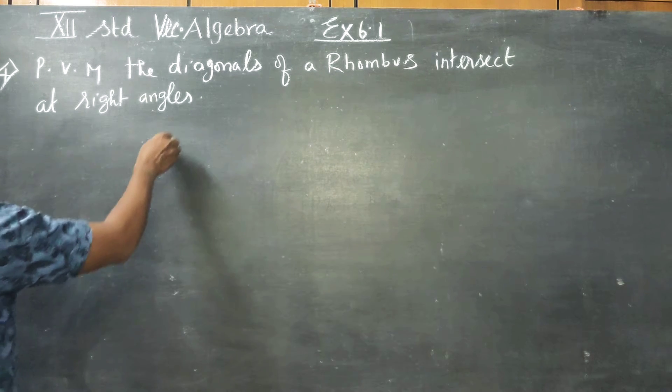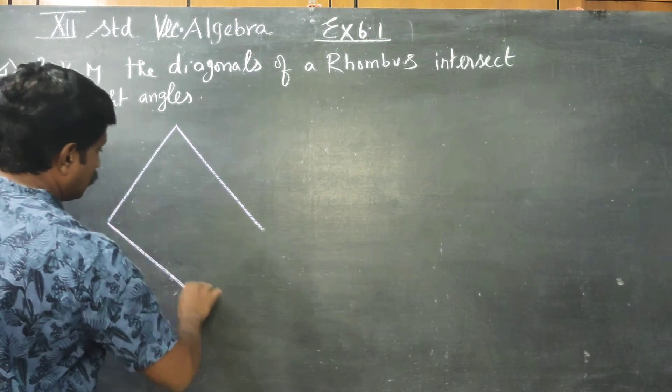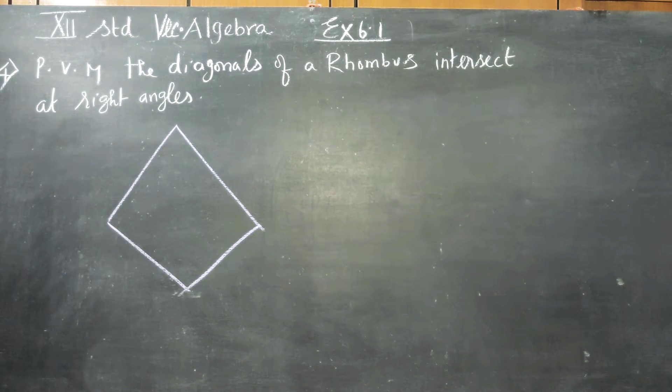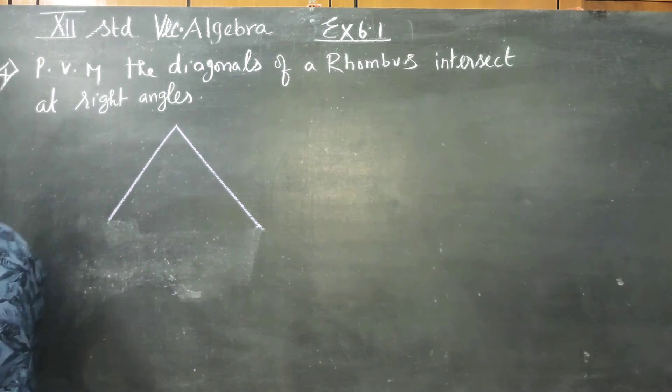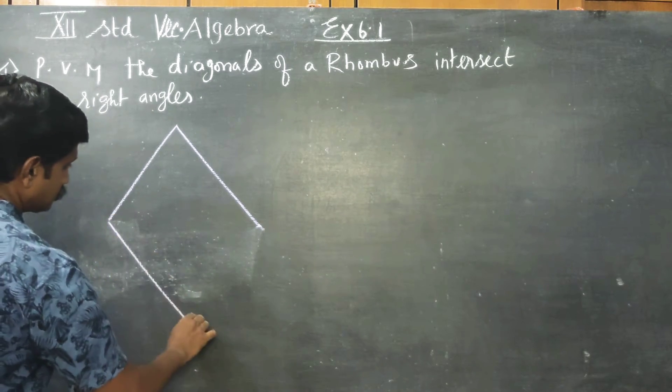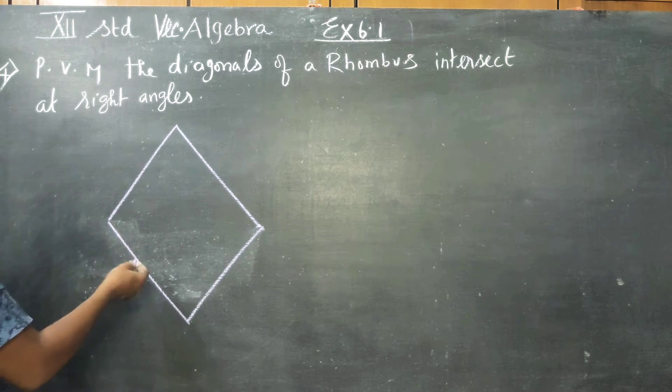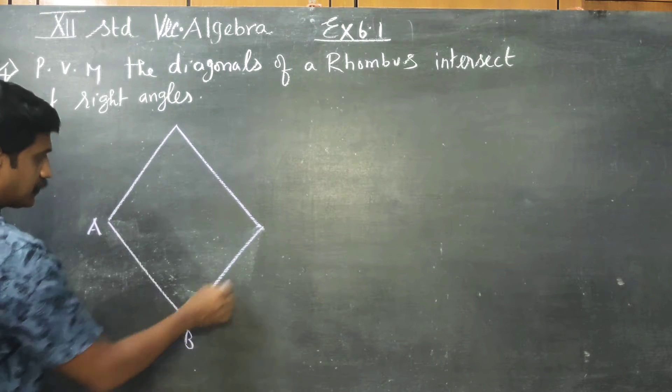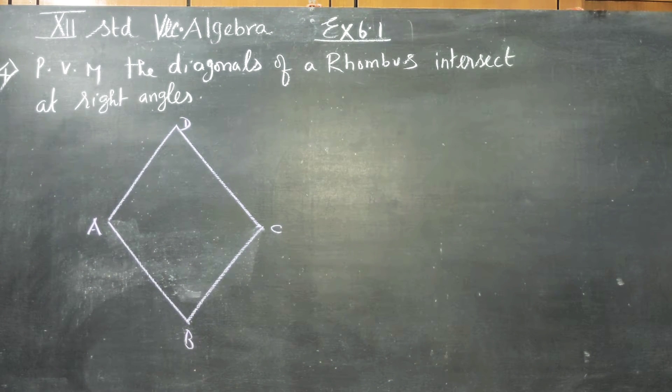Let us draw a rhombus. The beautiful property of the rhombus is all sides must be equal. Let us name this as A, B, C and D. Let ABCD be the rhombus.